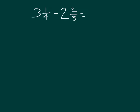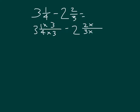Here I have 3 and 1 fourth minus 2 and 2 thirds. You'll notice this time I actually have 2 mixed numbers. First thing again is to go ahead and get like units. So I have 3 and 1 fourth — it goes 4, 8, 12 — so I can just multiply by the other denominator. Minus 2 and 2 thirds, so that's 2 times 3 and 3 times 4, because I'm using the other denominator and I know I'm getting to 12. 1 times 3 is 3, 4 times 3 is 12, that's 3 and 3 twelfths.